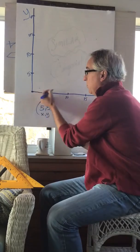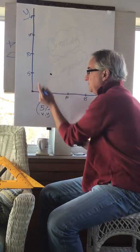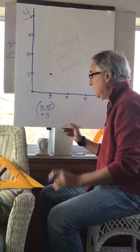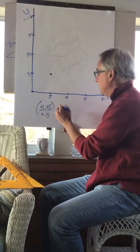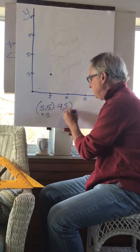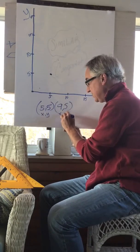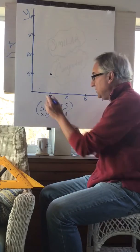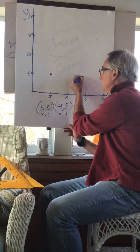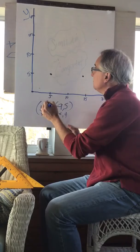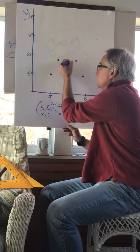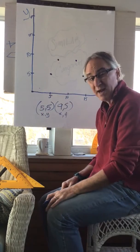Give you another ordered pair: nine five. This is X, this is Y. Nine five point. I'm going to be giving you some ordered pair points to plot.